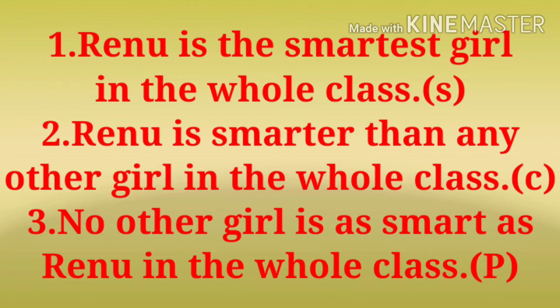We must convert it into comparative degree: 'Renu is smarter than any other girl in the whole class.' This is comparative degree because the format is: adjective + er + than + any other. The positive degree is: 'No other girl is as smart as Renu in the whole class.' It is positive degree because the format is: no other + as + adjective + as. In positive degree, the simplest form of an adjective is used.